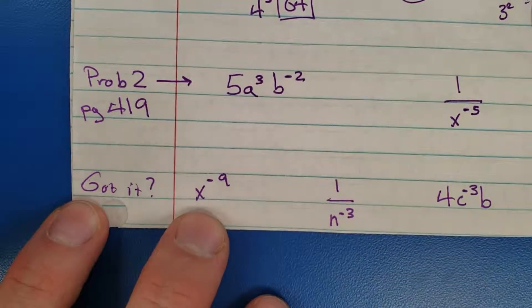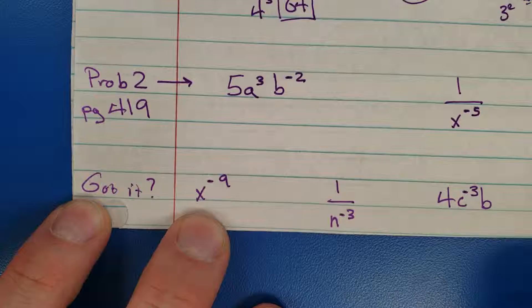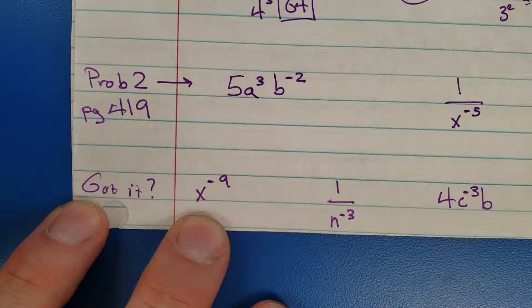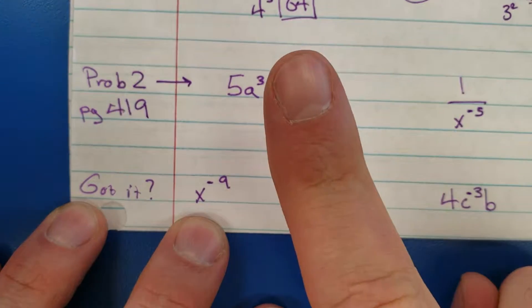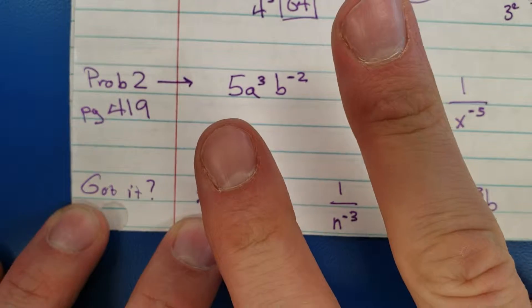Alright, problem two. Now we're just flexing our muscles here. All we're doing is rewriting, we're just moving things around. Two rules: one, if it's negative you move it; two, if it's zero it goes away.